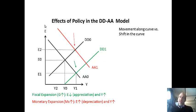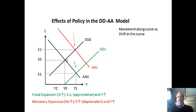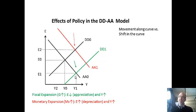For a monetary expansion — shifting AA while keeping the original DD line — monetary expansions also increase GDP but weaken the currency. Printing more dollars leads to a depreciation of the currency, and lowering rates through the interest rate parity condition weakens the currency. So fiscal and monetary policy have the same result for GDP — it increases — but opposite effects on the value of the currency: fiscal expansion strengthens it, monetary expansion weakens it.